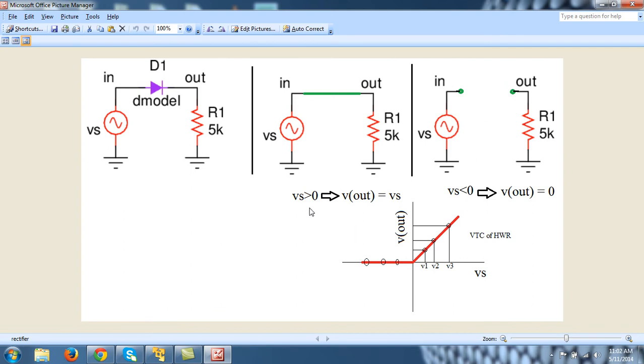When the input voltage is less than zero, or vs is less than zero, output is zero because this diode will behave for negative input as an open circuit. Hence no current flows into the resistor R1, and vout is equal to i times R1 equal to zero.